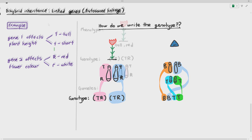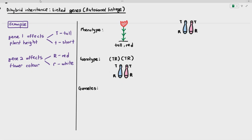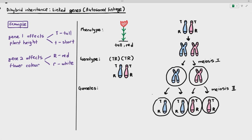For the homozygous dominant parent — tall and red — the genotype is written (TR)(TR). What gametes can it produce? The chromosomes undergo DNA replication to become sister chromatids, then meiosis I separates the homologous pairs and meiosis II separates the sister chromatids. Crossover and independent assortment will not produce genetically different gametes here because the organism only has large T and large R alleles. All gametes will simply be large T large R.